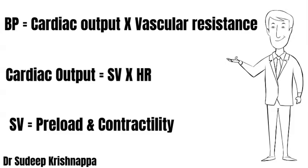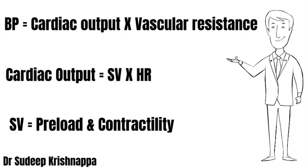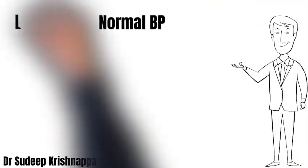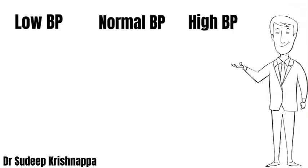The content can be looked at in terms of cardiac output, which is determined by heart rate times stroke volume — how many times the heart beats multiplied by how many milliliters of blood it ejects each time. Stroke volume is in turn determined by the end-diastolic filling pressure, that is preload, and the contractility of the ventricles. Thus we can have normal, high, or low blood pressure with varying combinations of cardiac output and vascular resistance.